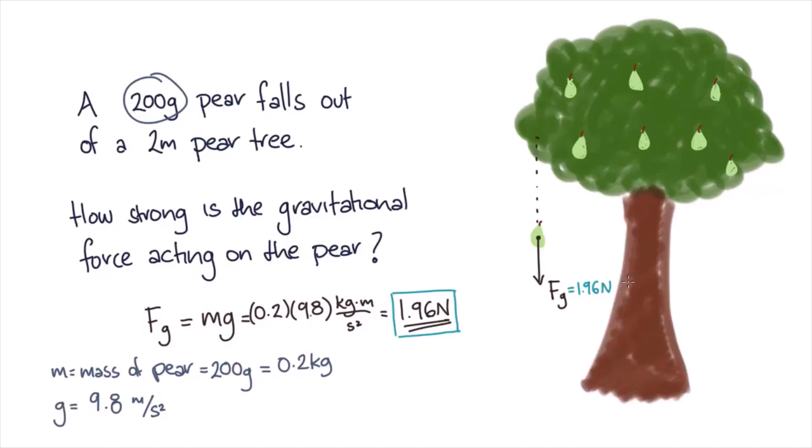Now you may have noticed that the height of the tree doesn't affect our answer. Near the earth's surface we approximate the acceleration due to gravity as 9.8 meters per second squared regardless of the height of objects above the ground.